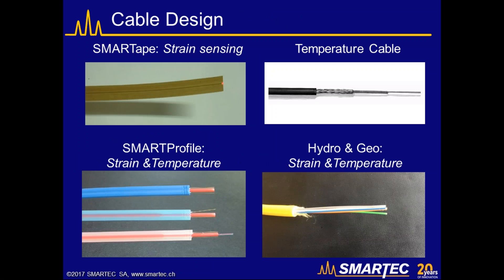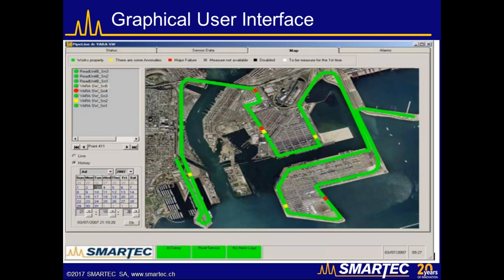The sensing cables come in different shapes depending on how they are installed: sensing tape for surface installation, and smart profile and HydraGeo to embed them in concrete or in the ground. The software receives the data, analyzes it, detects where strain exceeds predefined levels, and displays yellow and red dots at the locations where such events have occurred.